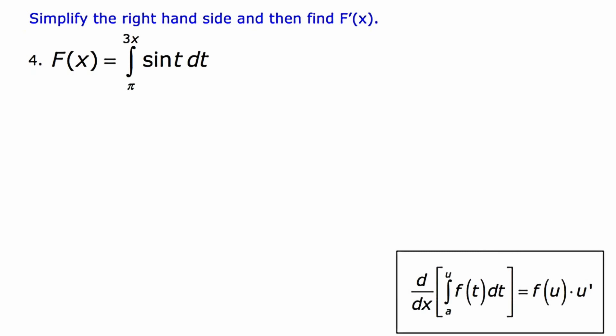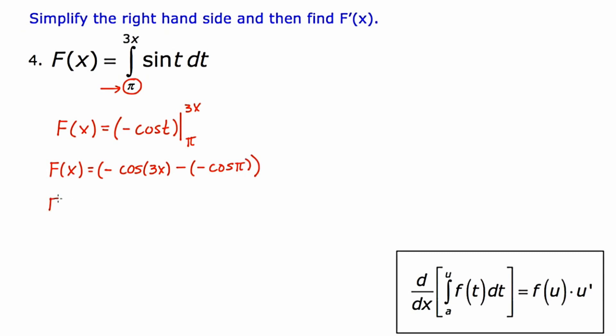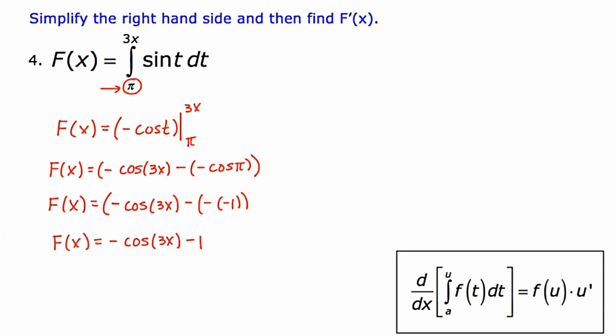On the next slide, our upper limit of integration is again something more complex than just x — it's 3x. Let's start by working only with the right-hand side and finding the anti-derivative of sine, which happens to be negative cosine. It should also be noted that the lower limit of integration is pi, which looks like a variable but is actually a constant — which is what we need for the second FTC to work. Now I'll substitute in 3x for t, then substitute in pi, and find the difference. Since the cosine of pi is negative 1, we end up with negative cosine 3x minus 1. That's a suitable expression for f of x.